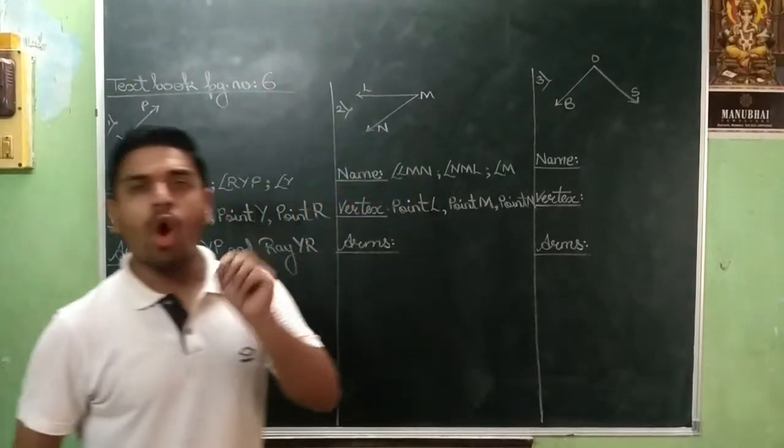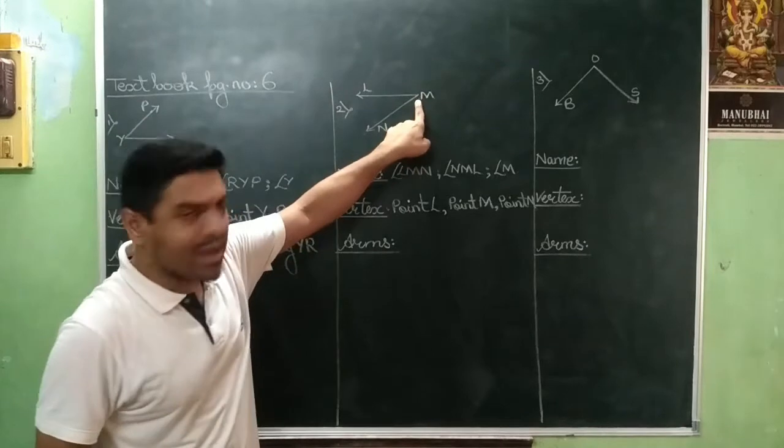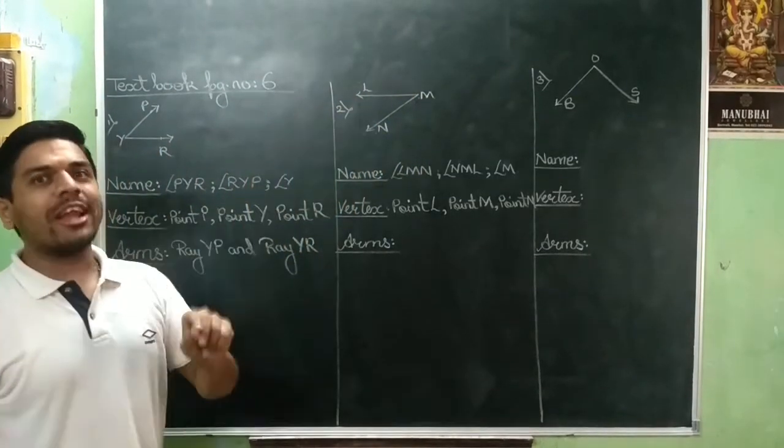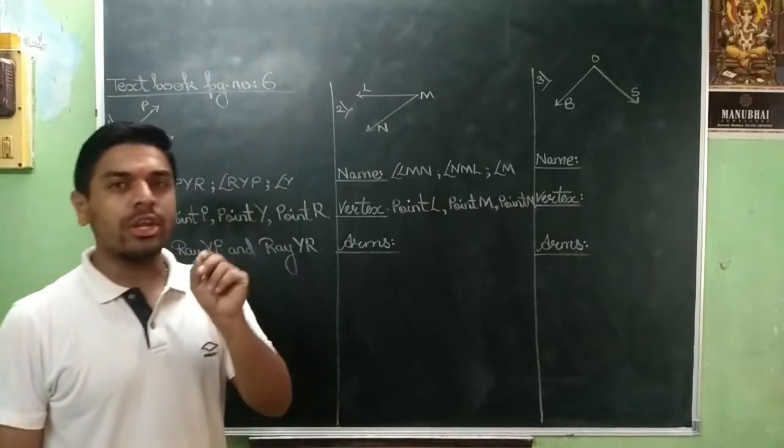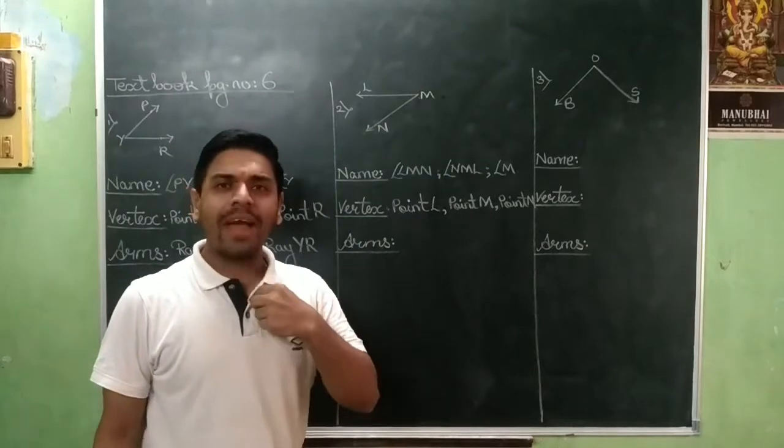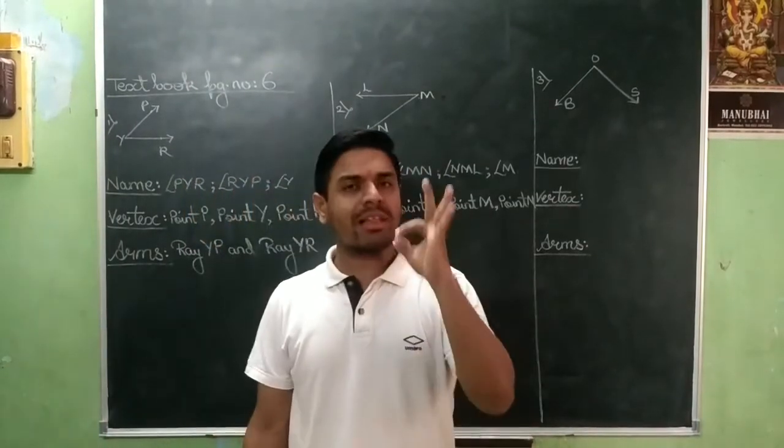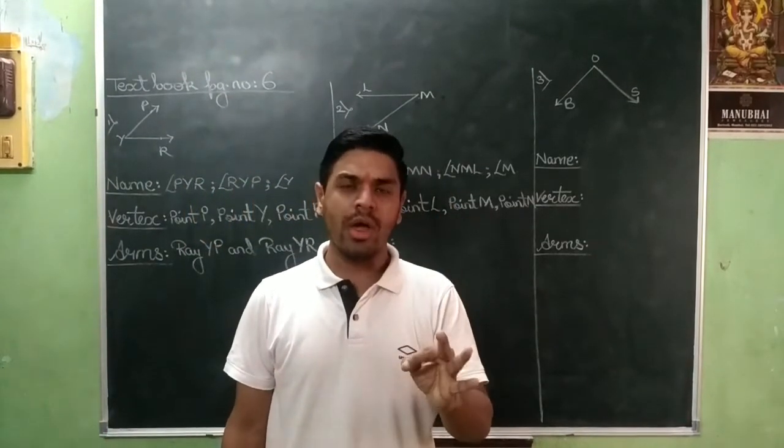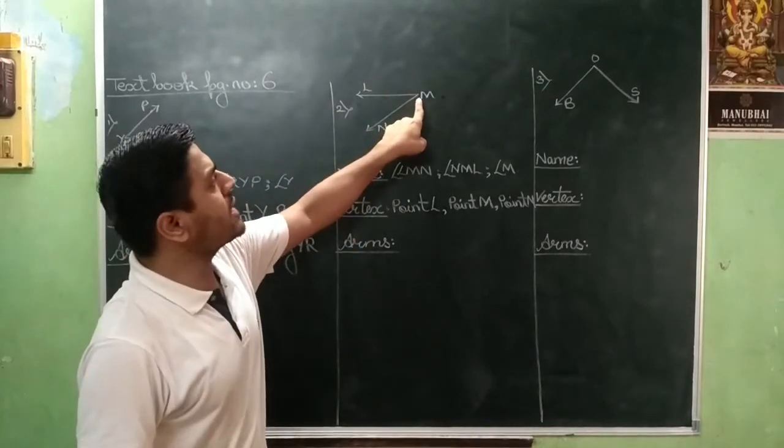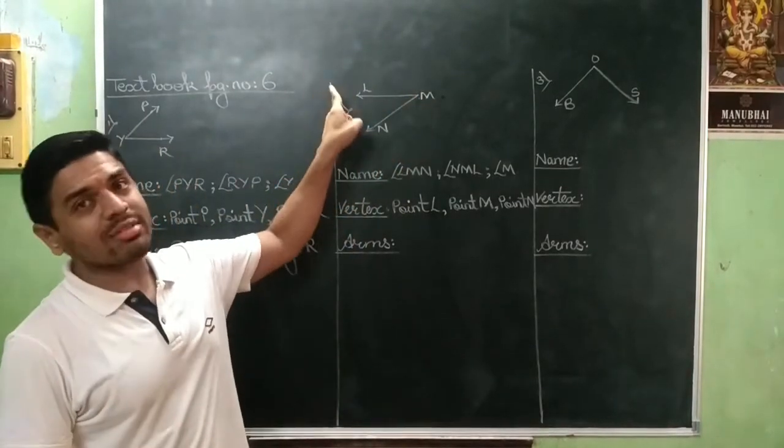Ray naming class, we always begin from the point and then we move towards the arrow. So if in your test or examination, you will write L, M as a ray, I will give you wrong. I means not myself, I means your math teacher will give you wrong. Ray naming always starts from the point and goes toward the arrow.